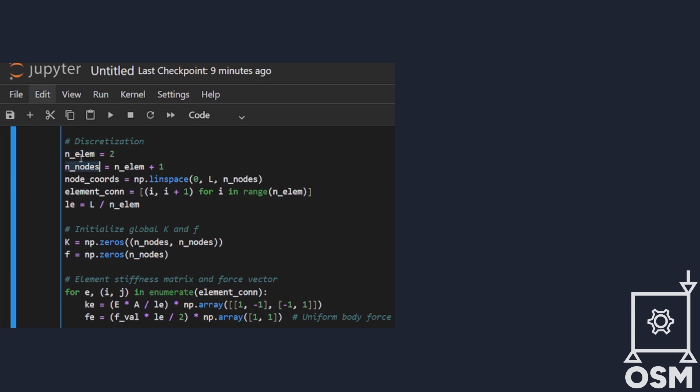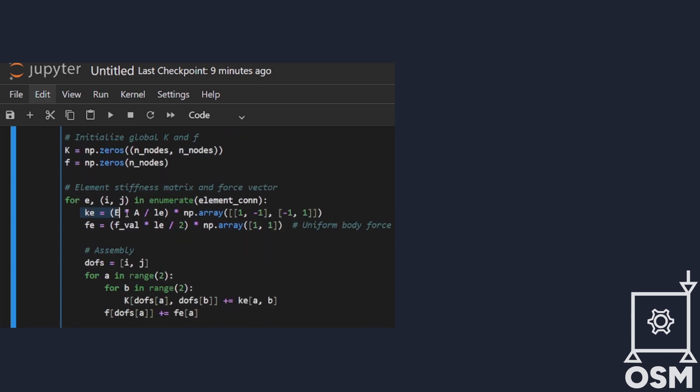We discretize the domain using two linear elements, giving us three nodes. For each element, we compute the local stiffness matrix using the formula EA divided by element length, multiplying by this vector, and the local load vector using a simple midpoint rule.